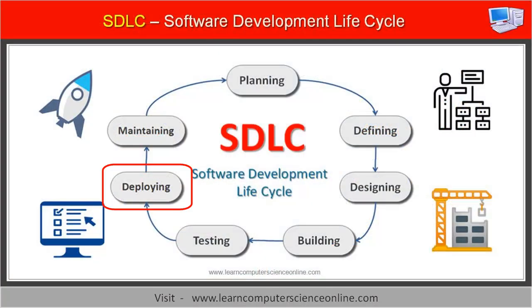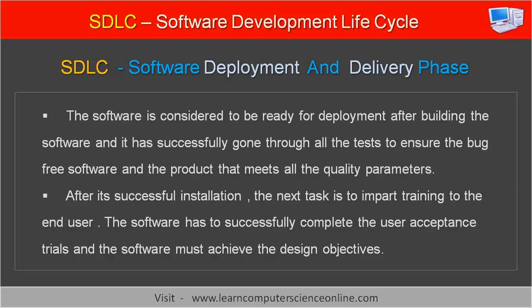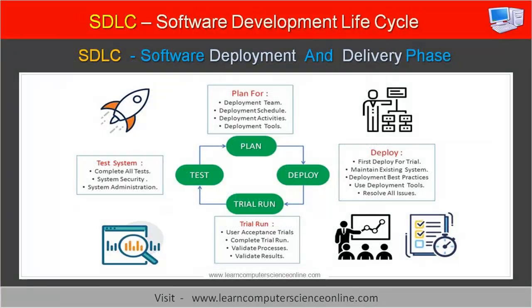The sixth phase in the software development process is software deployment and installation. The software is considered ready for deployment after it has successfully passed all tests, ensuring a bug-free product and other quality parameters. After successful installation, the next task is to impart training to the end user.